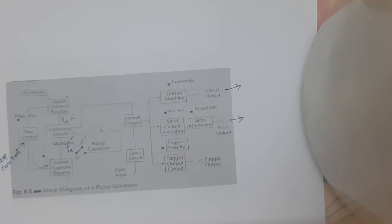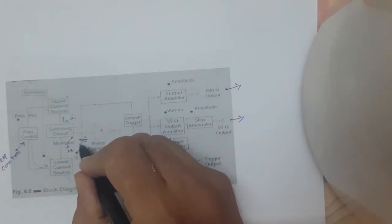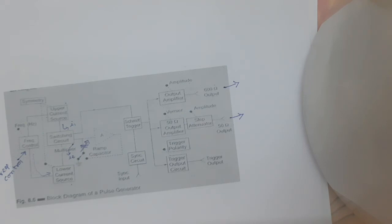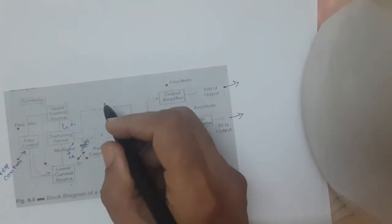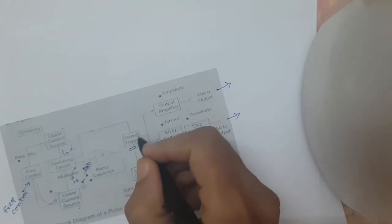The basic generating loop consists of the current source, the ramp capacitor, and the Smith trigger and current switching circuit. The upper current source supplies a constant current to the capacitor and the capacitor voltage increases linearly. When the positive slope of the ramp voltage reaches the upper limit set by the internal circuit components, the Smith trigger changes its state.